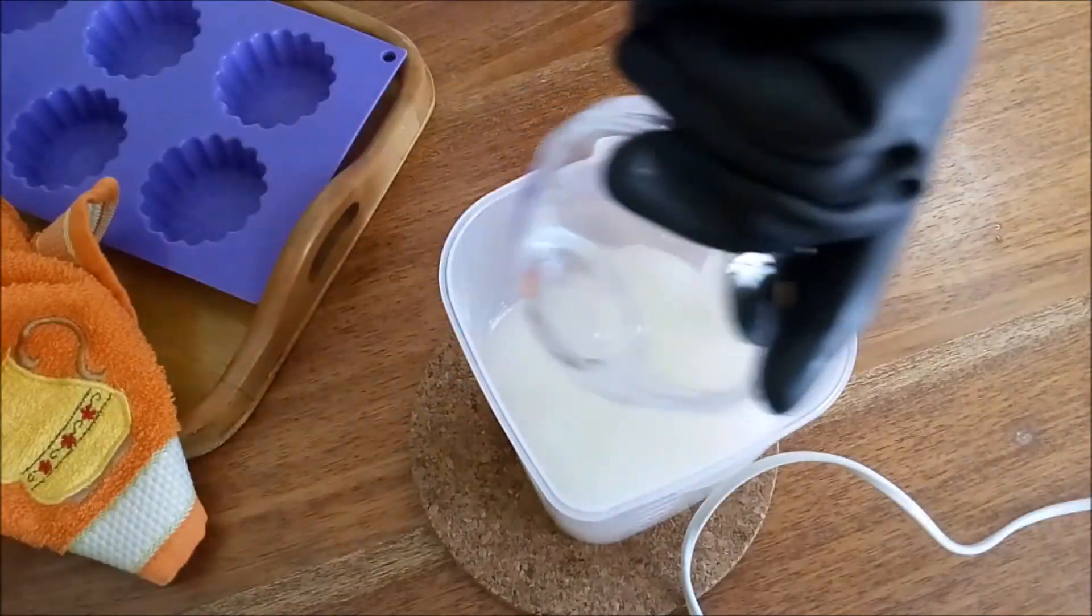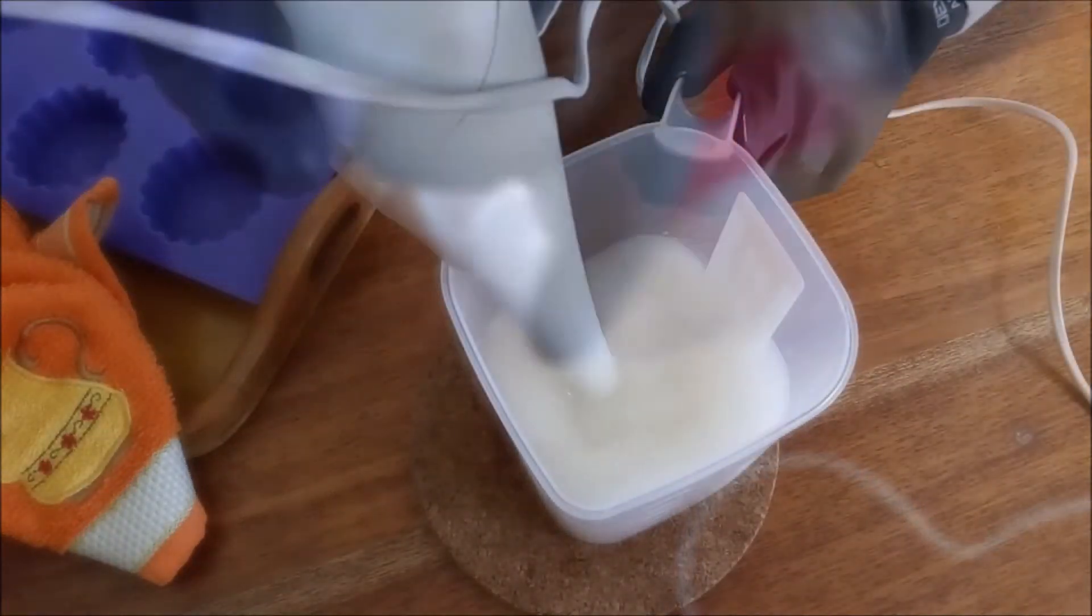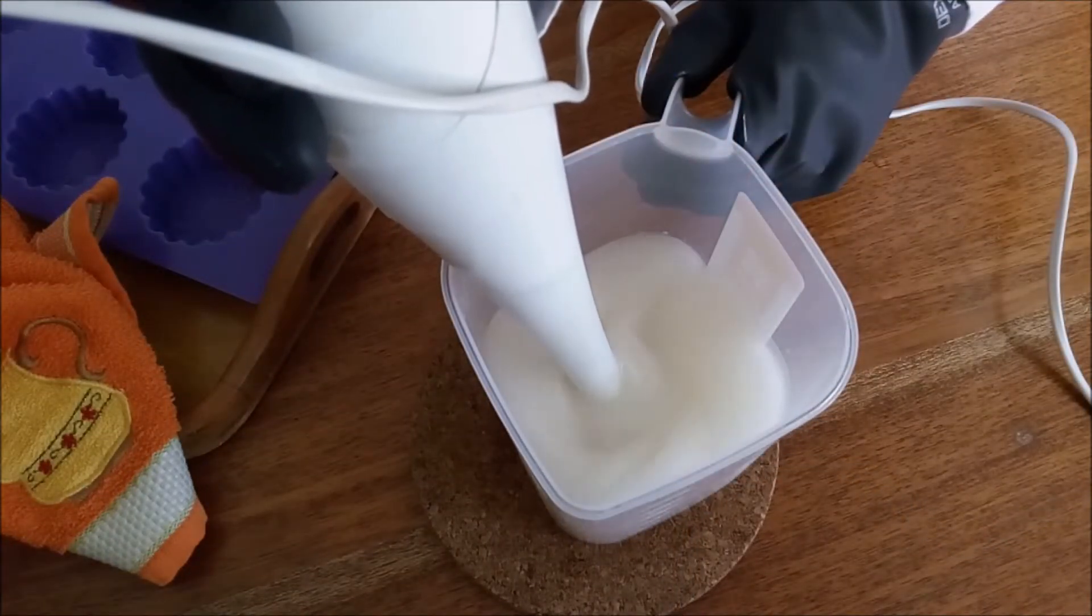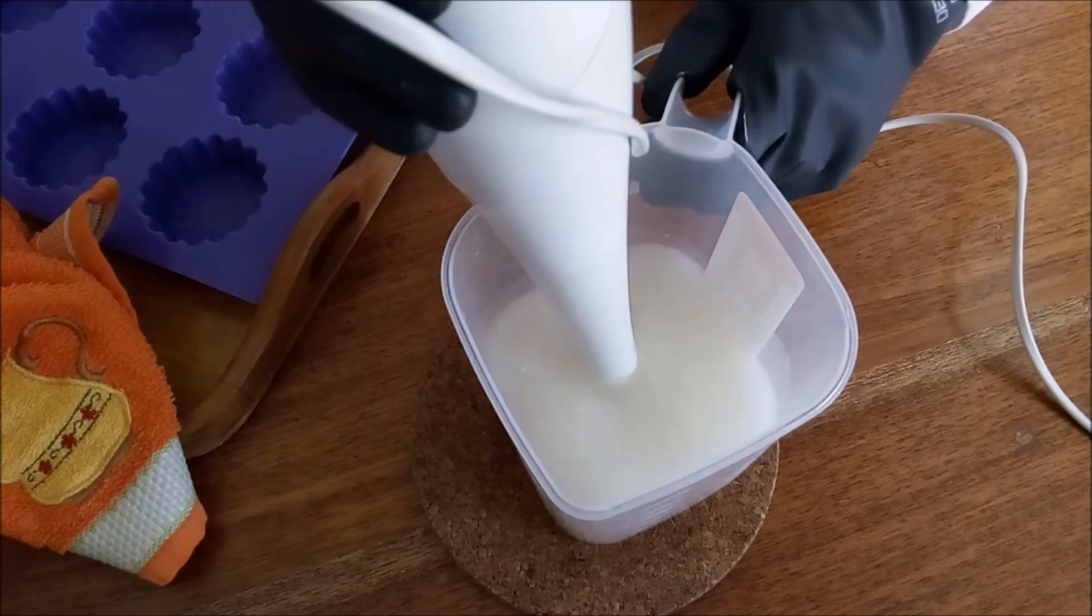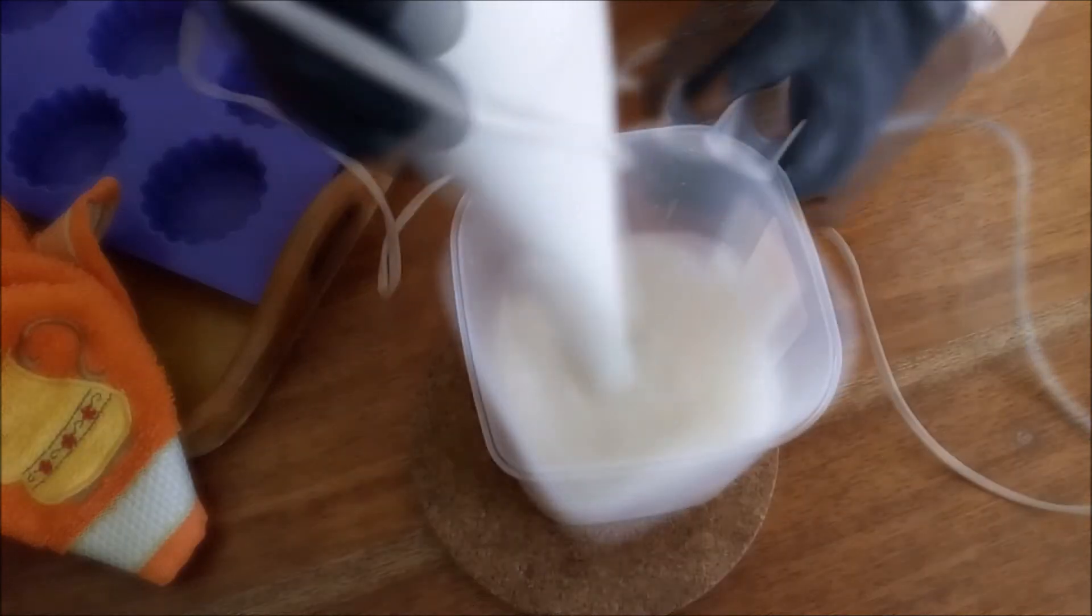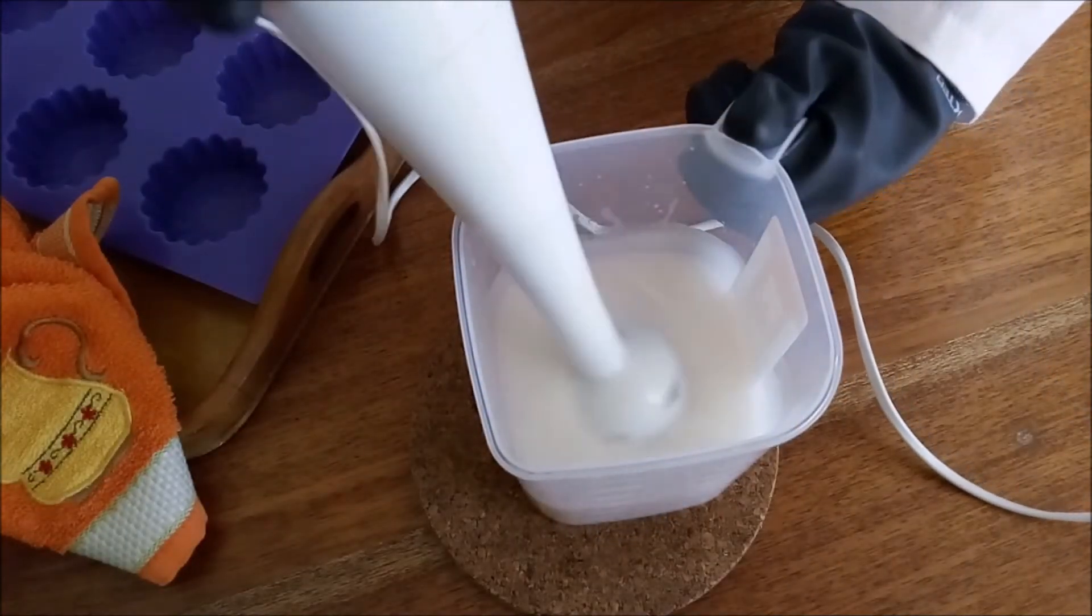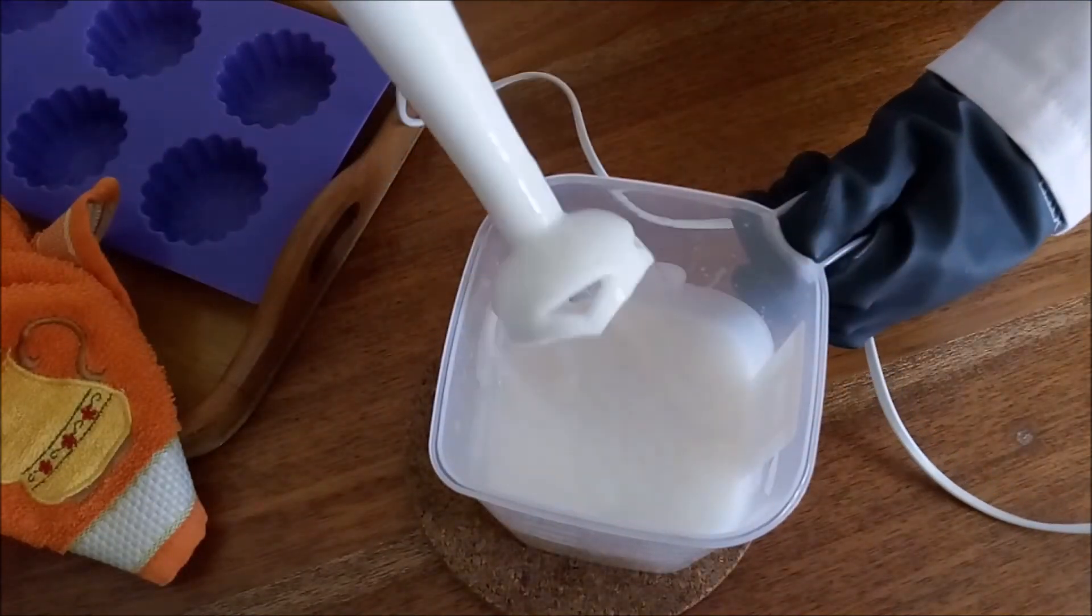Add the essential oils and mix with a hand blender until the trace is reached. The trace is when the soap reaches the emulsion point, that is, the point at which the water solution and the oil solution mix together and form a viscous batter where you can identify lines when you pass the spatula or blender through.